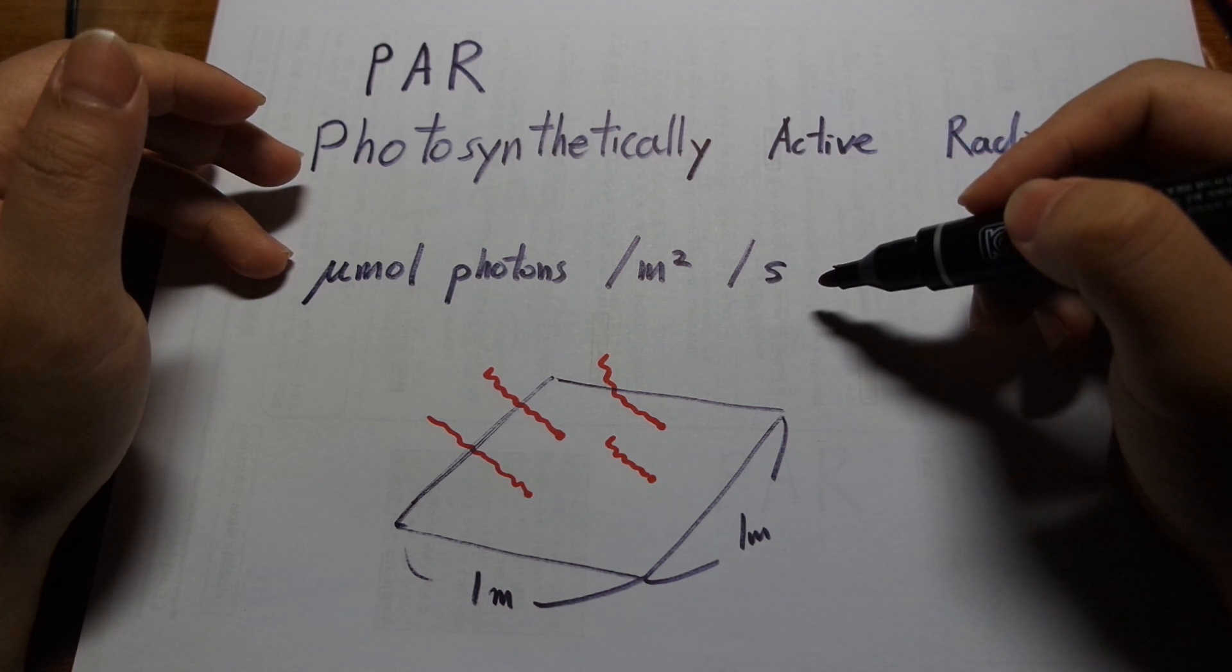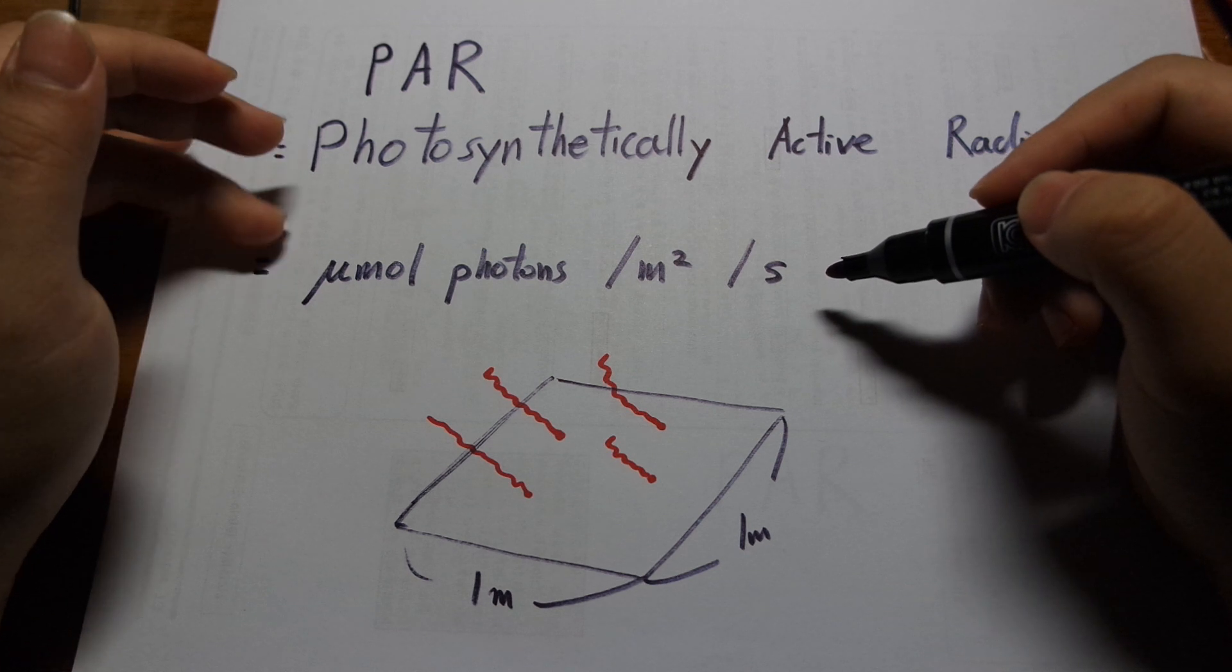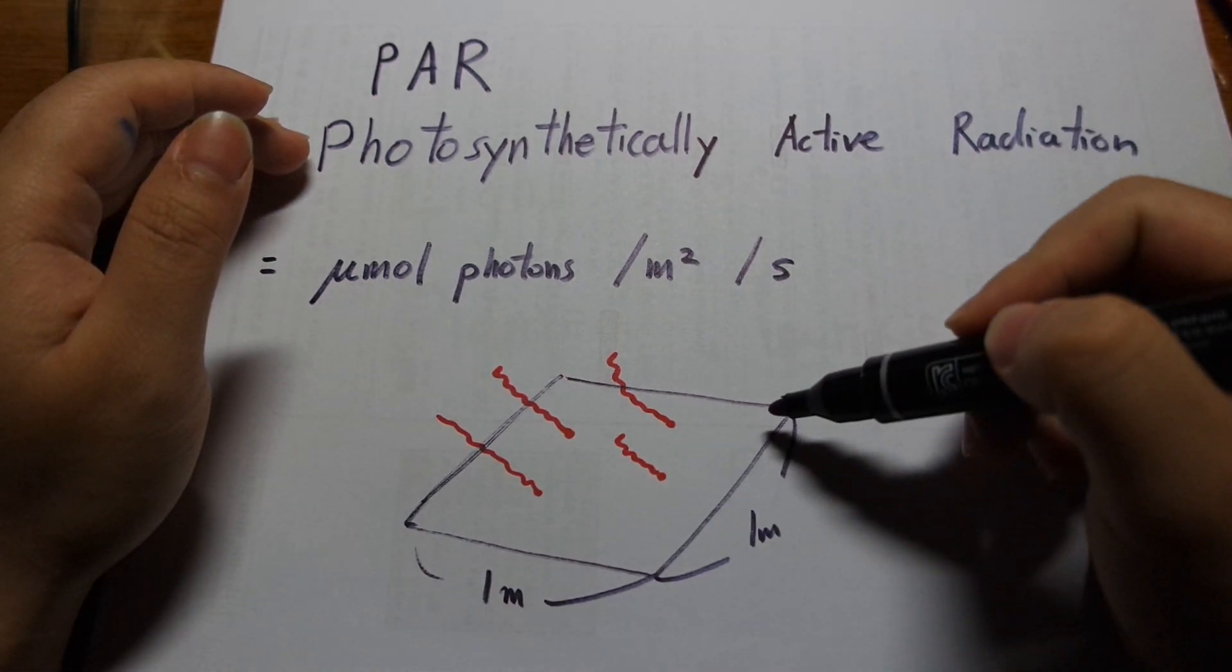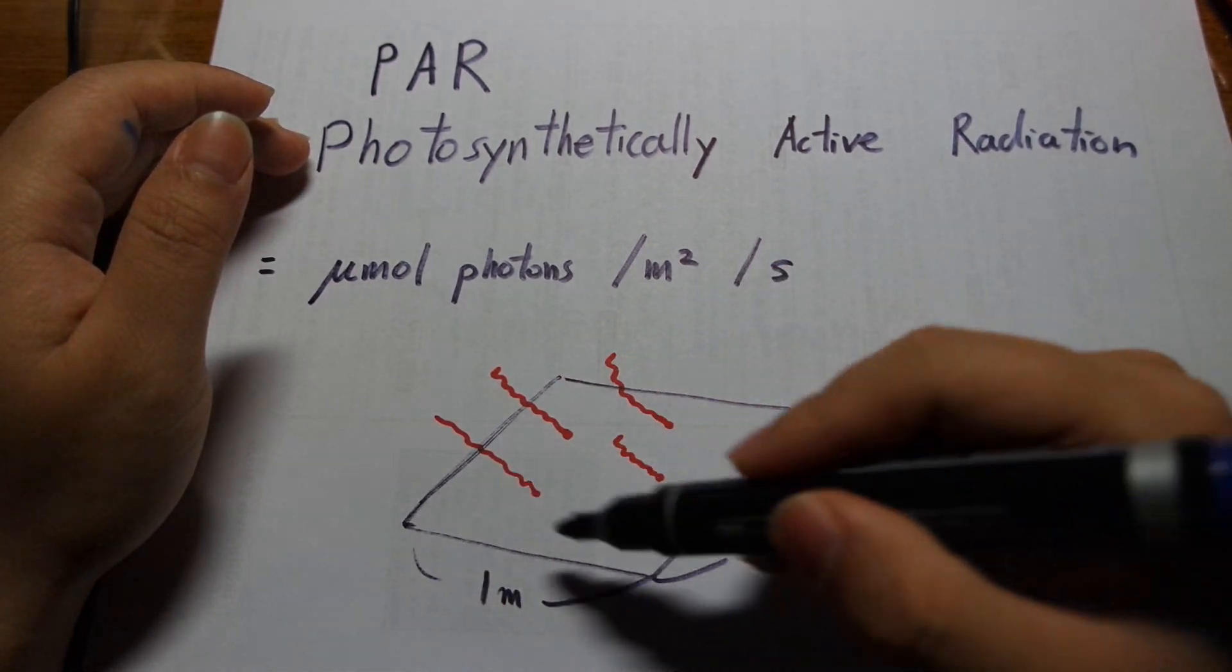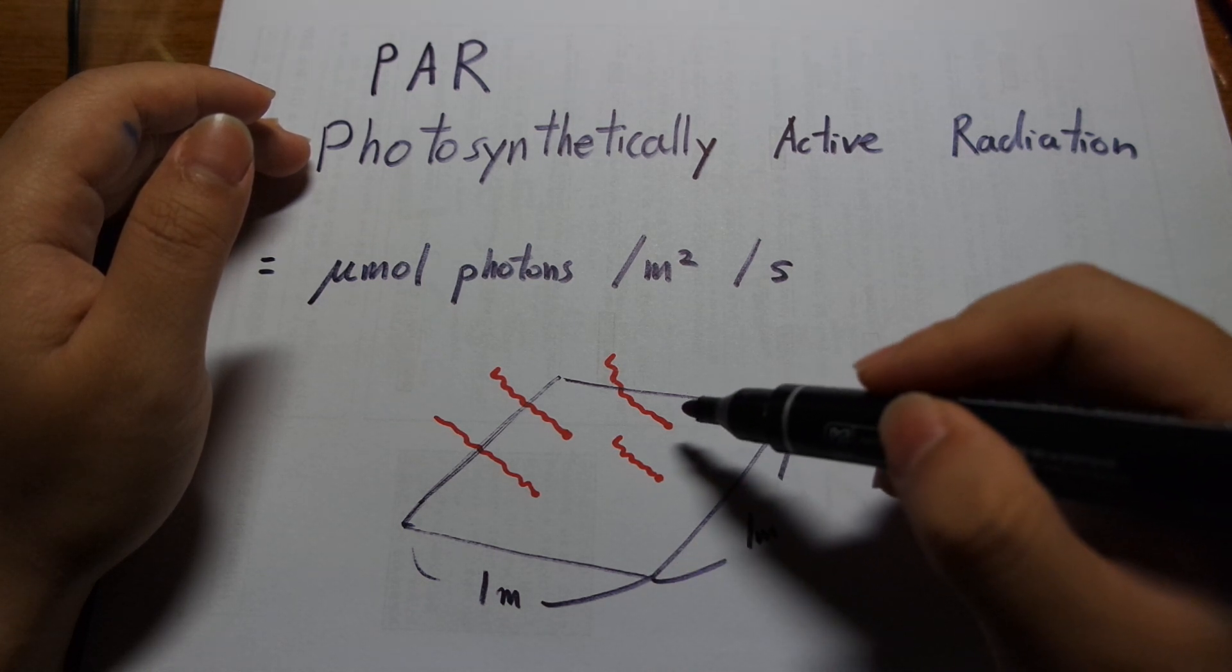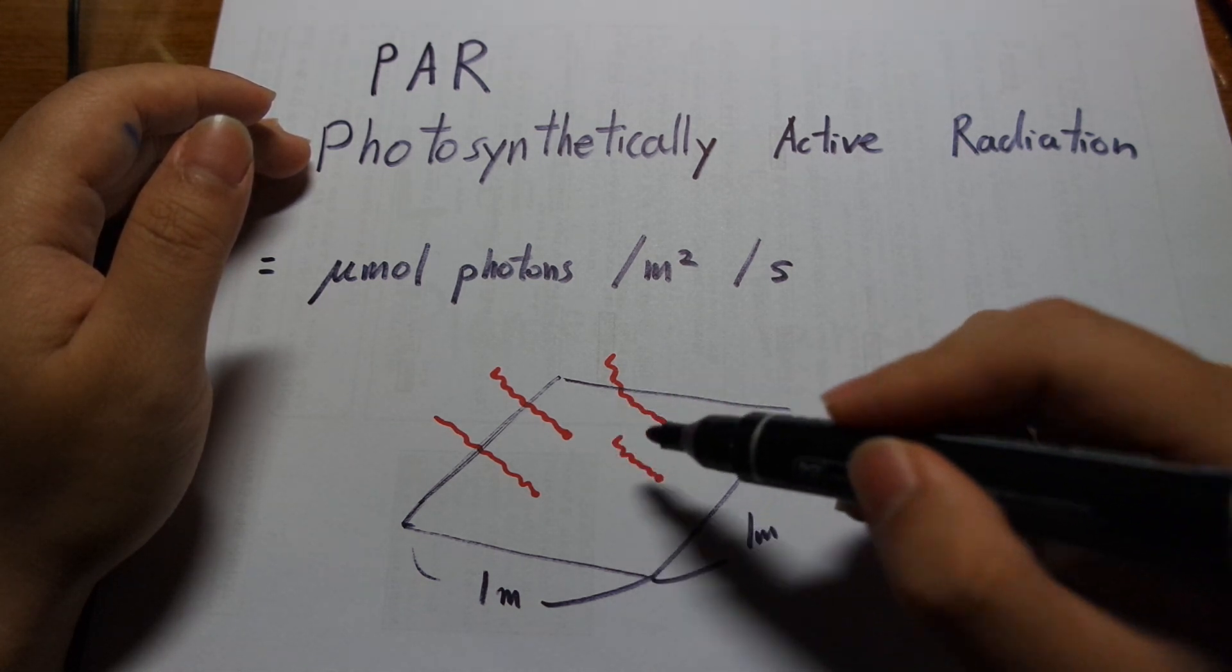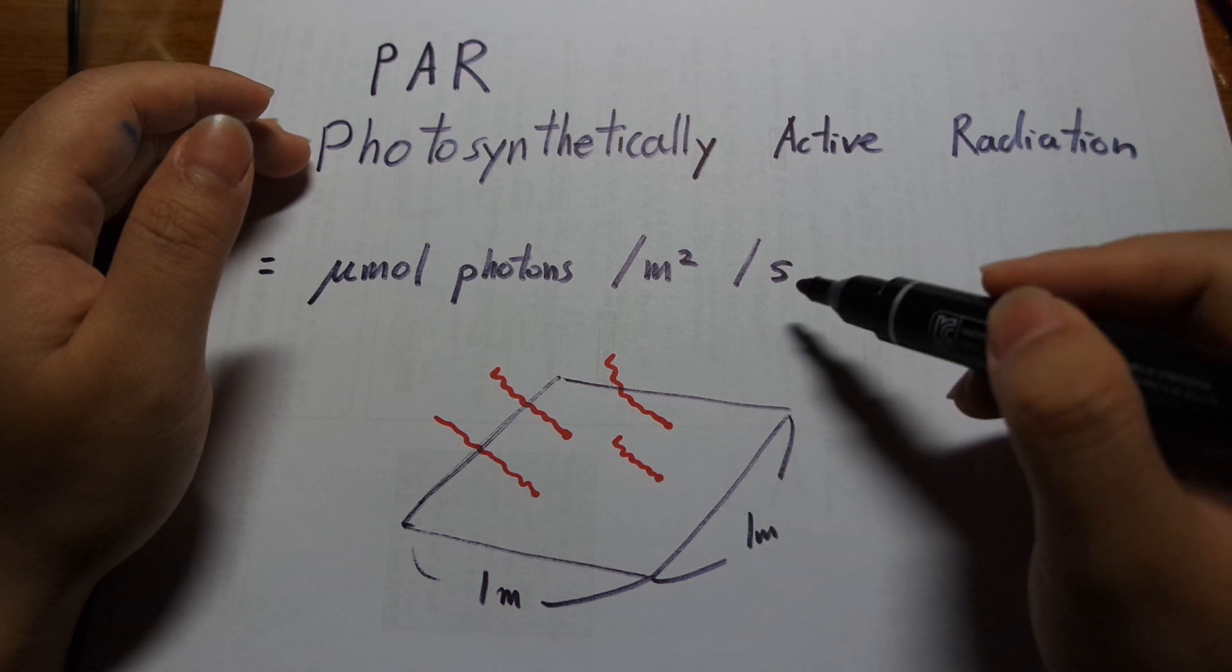So PAR is how many photons are hitting a one square meter area, so its area that is one meter by one meter, how many in terms of number of photons is hitting this surface per second.